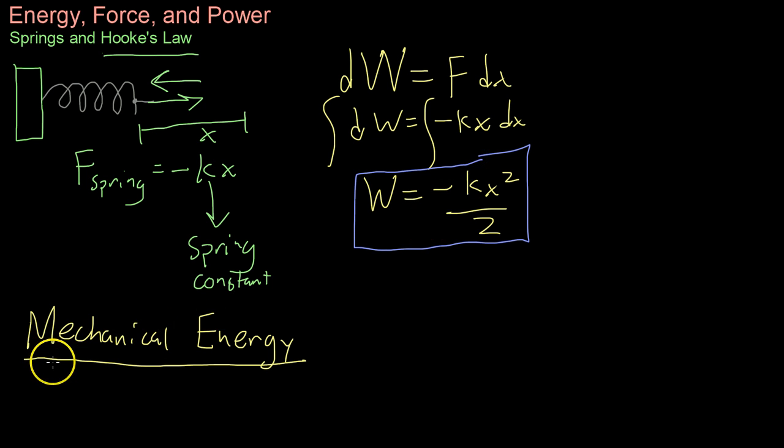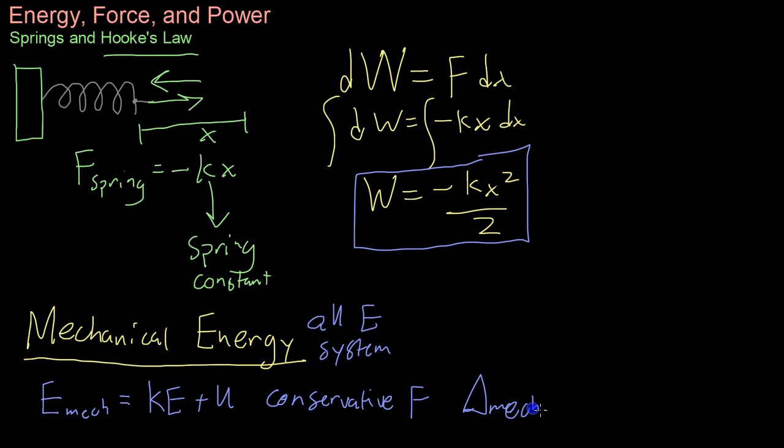Moving on now, we're going to be discussing the concept of mechanical energy. This is basically a sum of all the energy within a system. So mechanical energy, usually represented by E sub mech, is the kinetic energy plus the potential energy U of a system. And if everything has a conservative force, this means that the change in mechanical energy will always be zero. In other words, you always have recoverable energy.